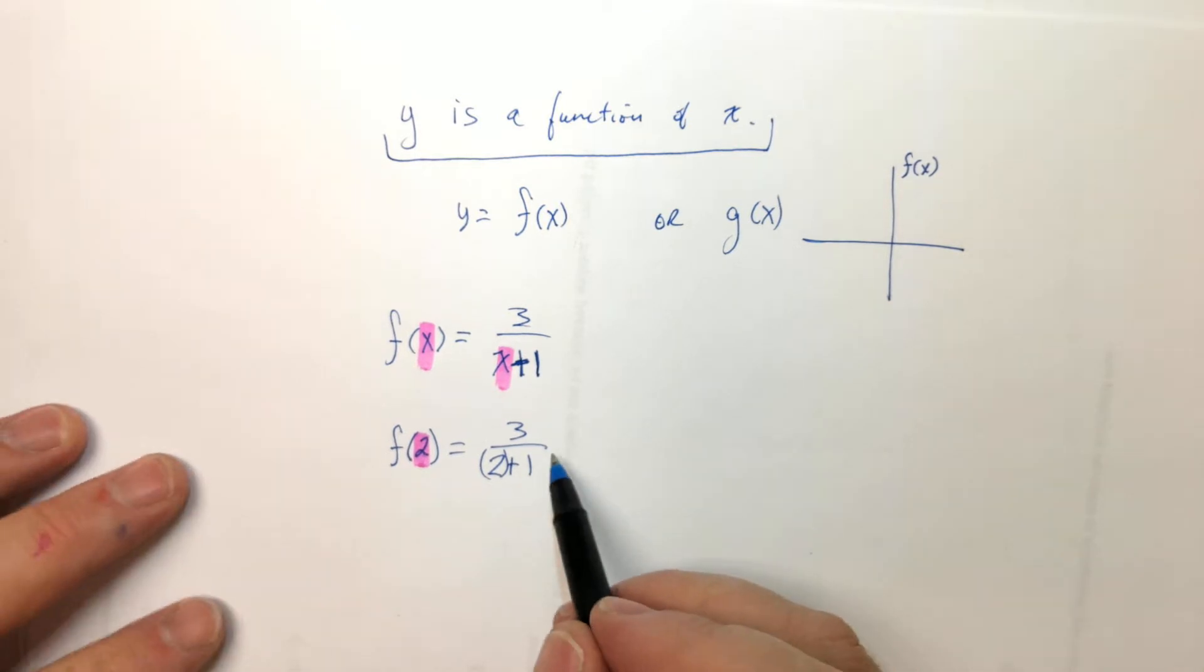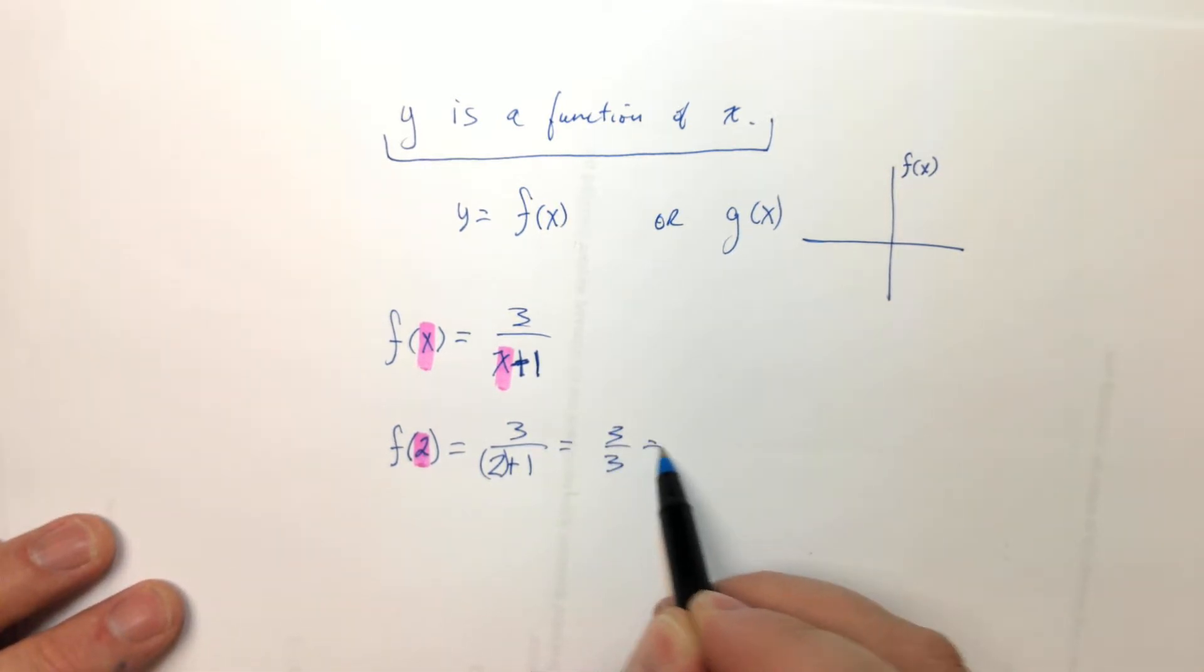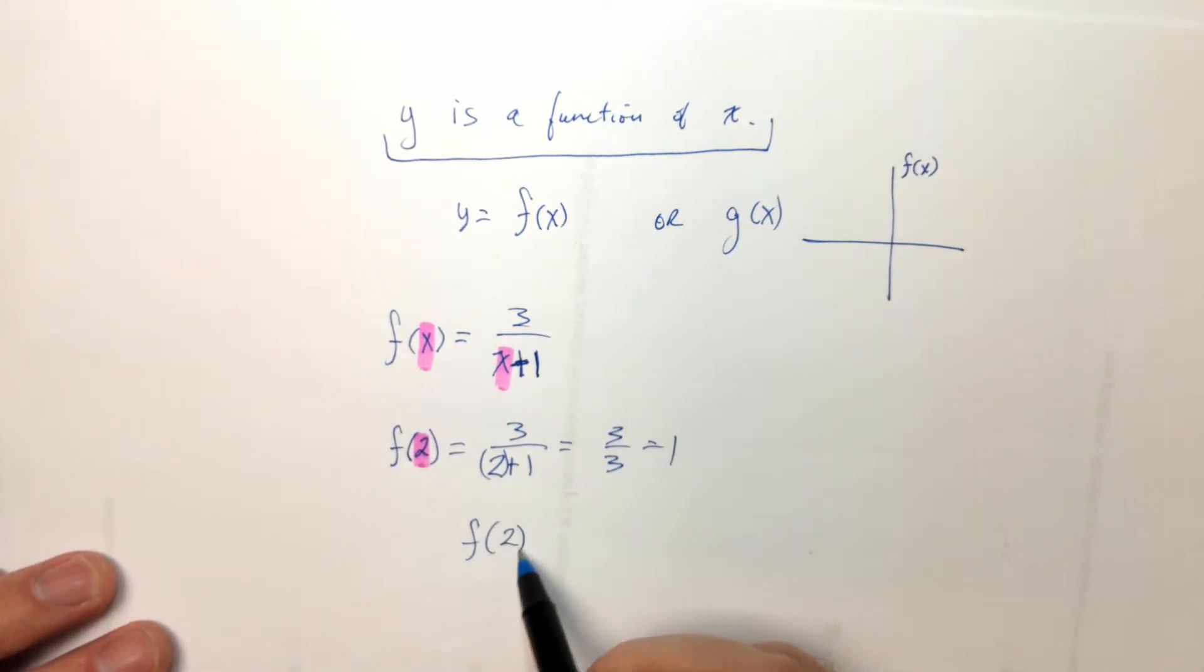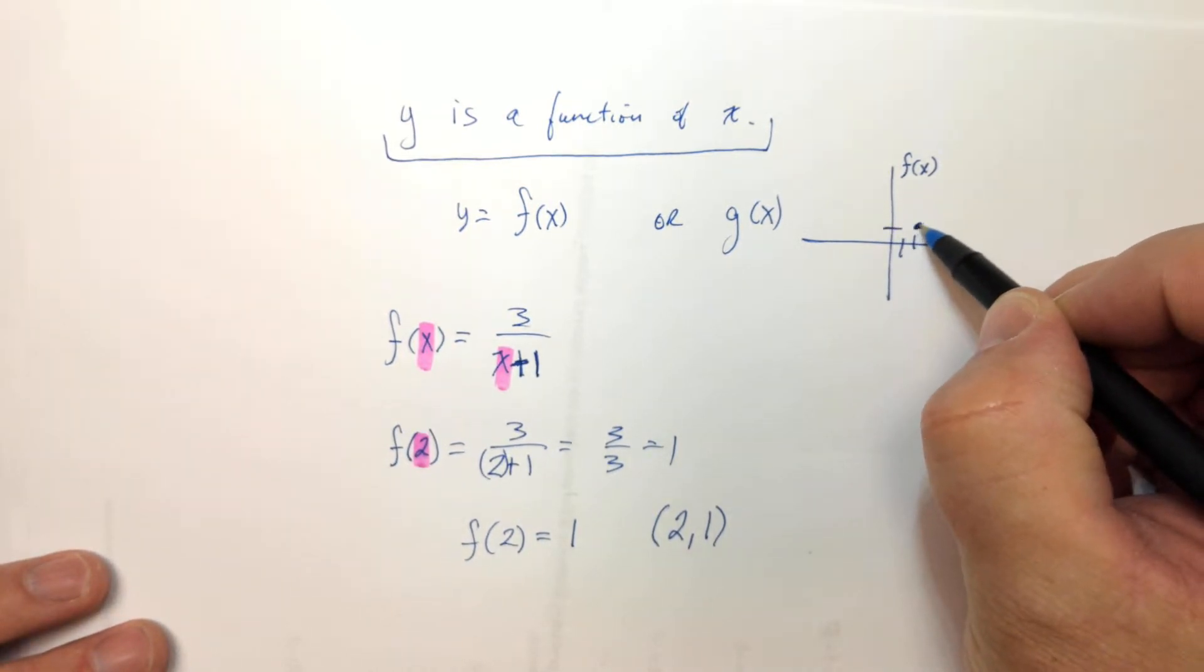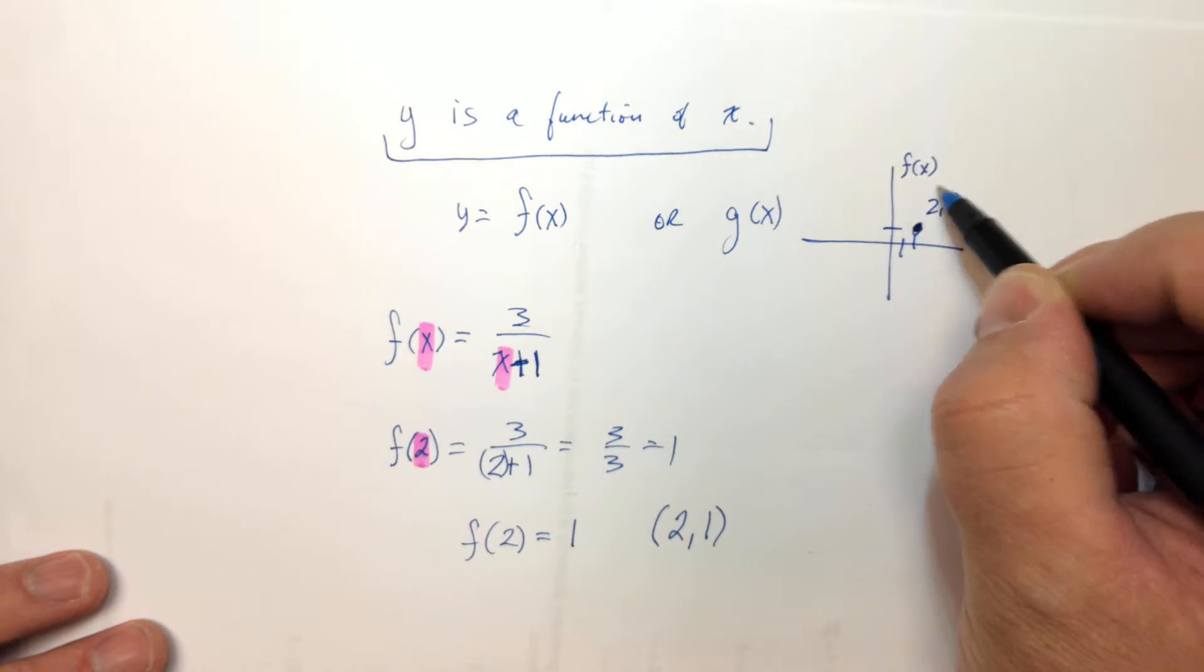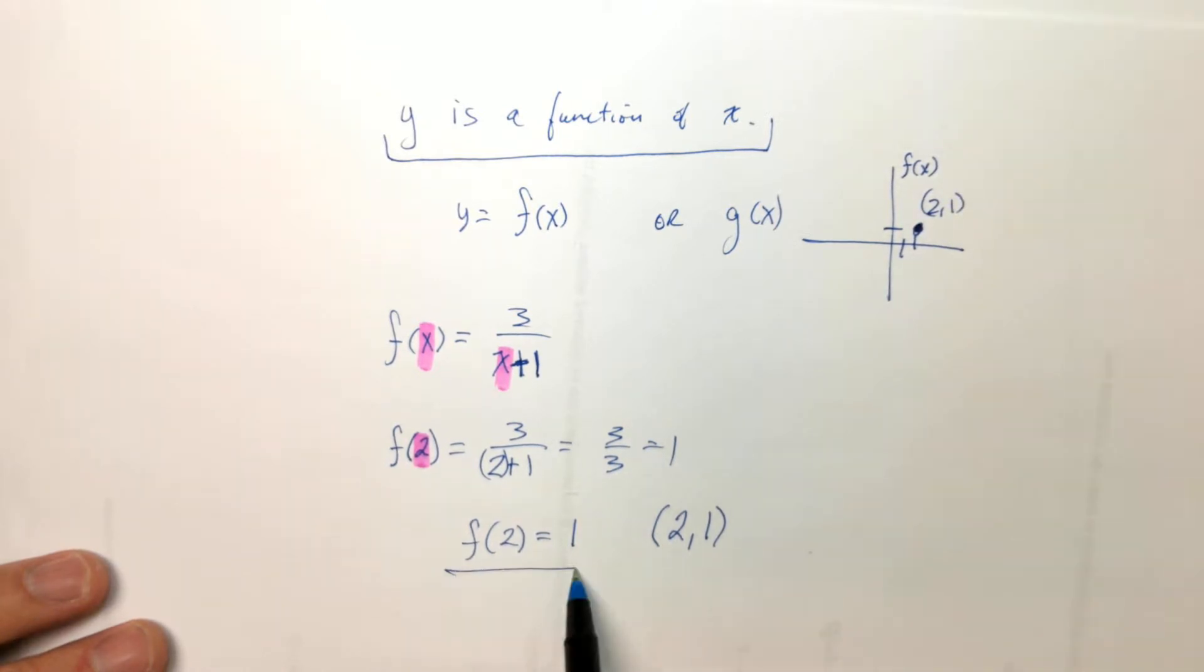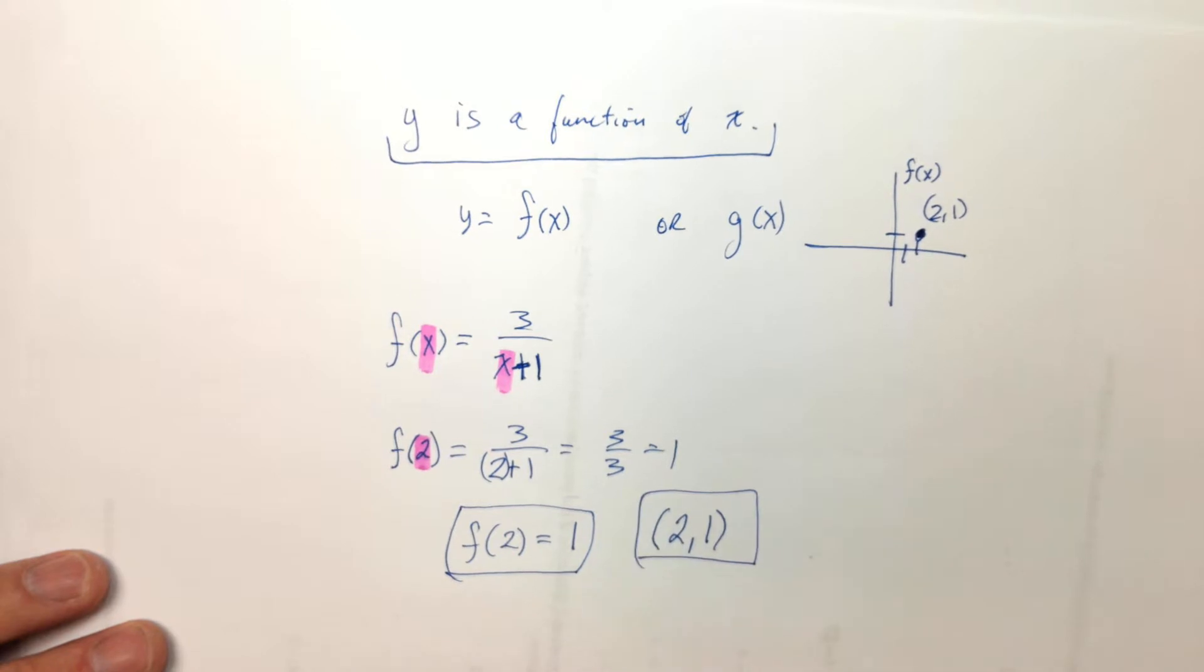We can put parentheses, because that kind of shows us we're plugging in. So that's 3 over 3, and that's equals 1. So what this means is f(2) equals 1. It's kind of like a coordinate. It's an ordered pair. 2, comma, 1. Which on a graph would be right there. 2, comma, 1.